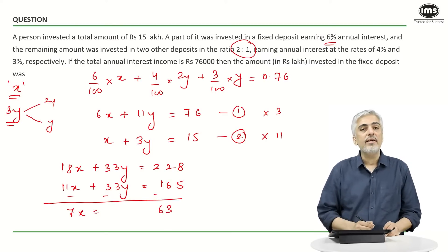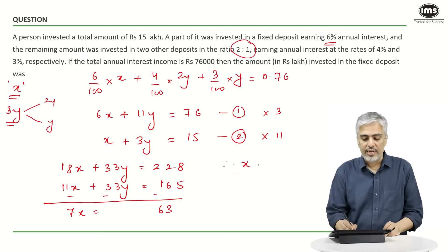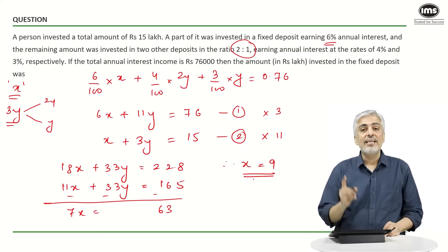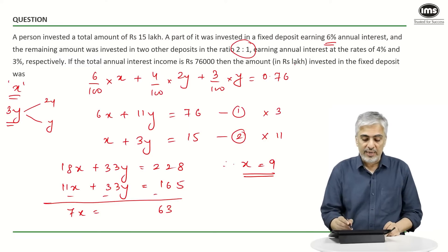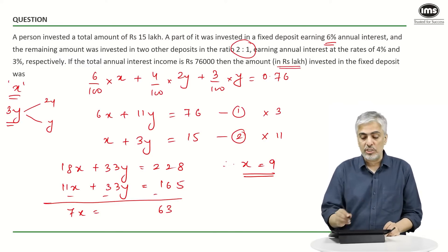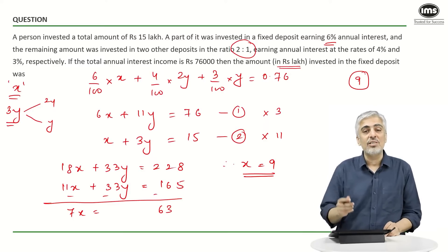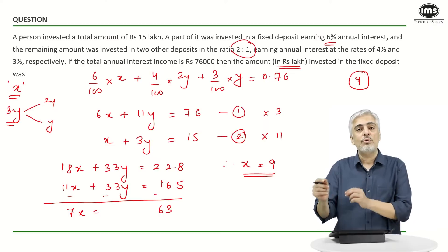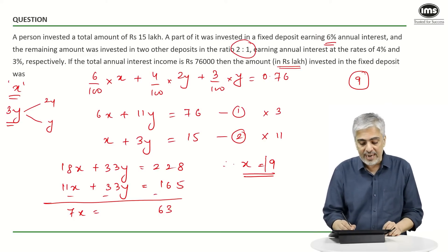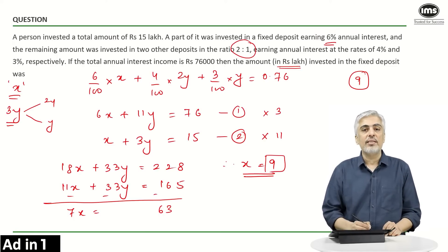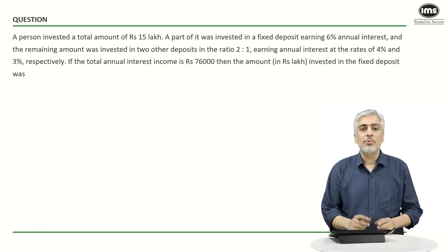7x is equal to 63, therefore x is equal to 9, and that is what you want to find. Now understand, the answer was 9 lakhs. Read the question very carefully. They have said in lakhs, which means in the actual question you input only 9 and not 9 lakhs. Now this is a very common mistake. A lot of students would input the whole 9 lakhs with all the zeros. You had to input only 9 in the answer. Please be careful about that.